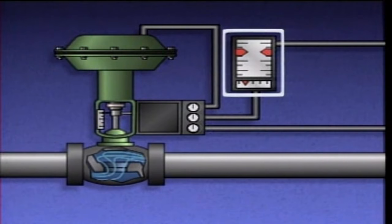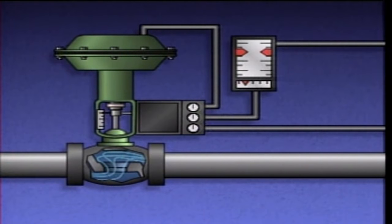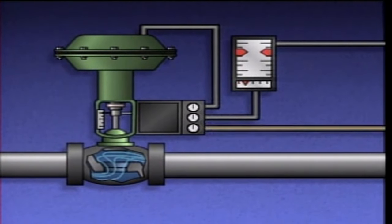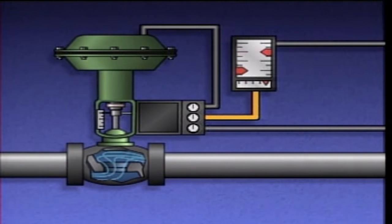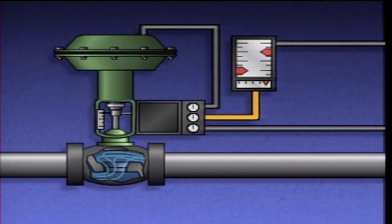When a positioner is used with an actuator, the signal from the controller goes to the positioner instead of directly to the actuator. The positioner controls a source of air that is sent to the actuator. When the controller sends a signal to close the valve, the positioner receives the signal and converts it to the appropriate air pressure using its air supply.